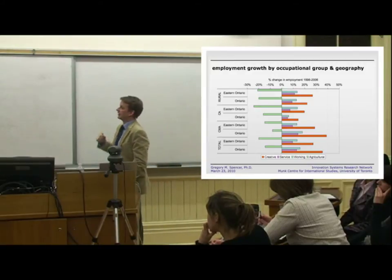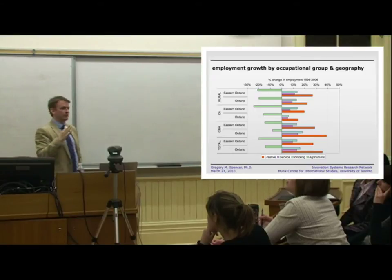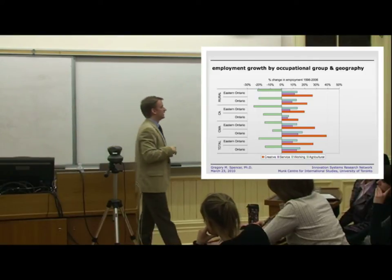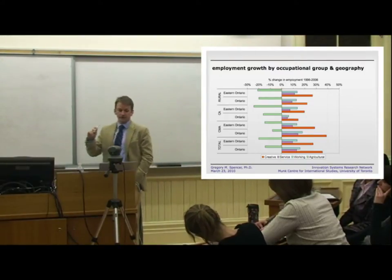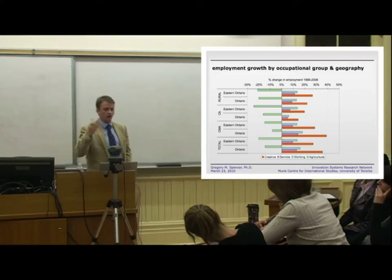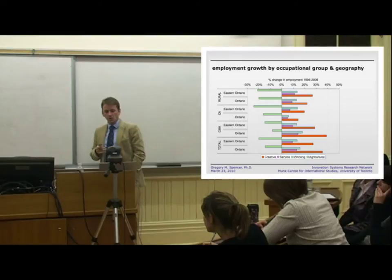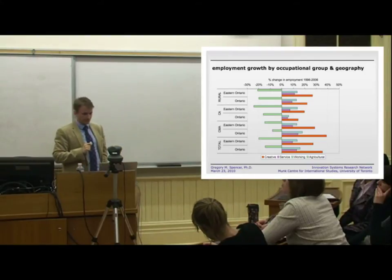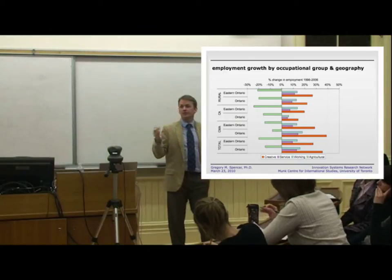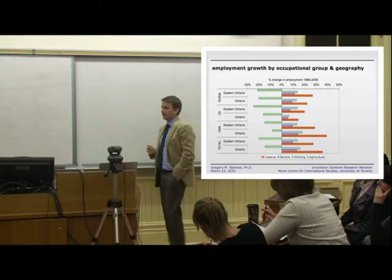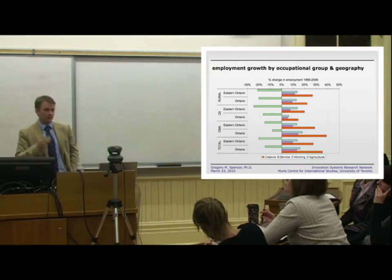Looking at this chart, you can see that rural CAs means smaller sort of urban regions, and CMAs are larger urban regions. We're looking at Ontario versus just Eastern Ontario. For example, the larger urban regions in Eastern Ontario are Ottawa and Kingston, while CAs are places like Brockville and Cornwall. We found that those jobs with the higher incomes were in fact growing at a much faster rate, and this was actually true in rural areas — it wasn't just an urban phenomenon. So that was some good news.